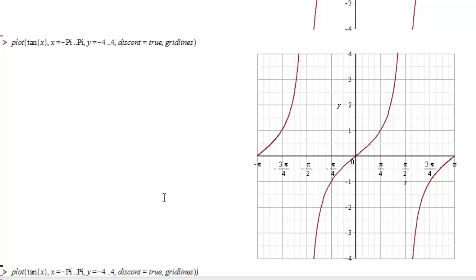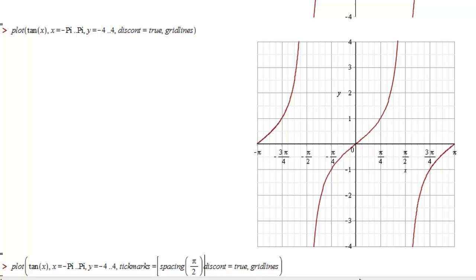You can do that as well using the plot option tick marks. Let's throw in tick marks. And to the tick marks command, you give it the spacing. Special values for trigonometric functions tend to happen at multiples of π and π over 2. So we're going to make our tick marks have spacing of π over 2. We want just regular style tick marks, so we'll tell it default style.